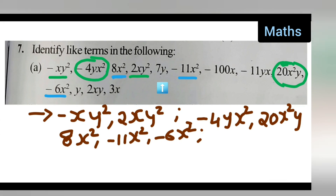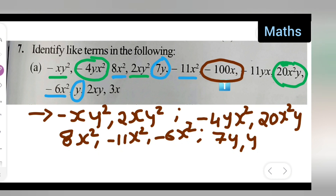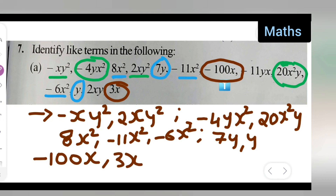So for 8x², all the x² terms are minus 11x² and minus 6x². Next, moving towards 7y — let me put a circle. 7y, the y terms, and here single y is there. Write down: 7y, comma, y. Next, what is after this — minus 100x. So the x terms: there are two x terms. Write down: minus 100x, comma, 3x.